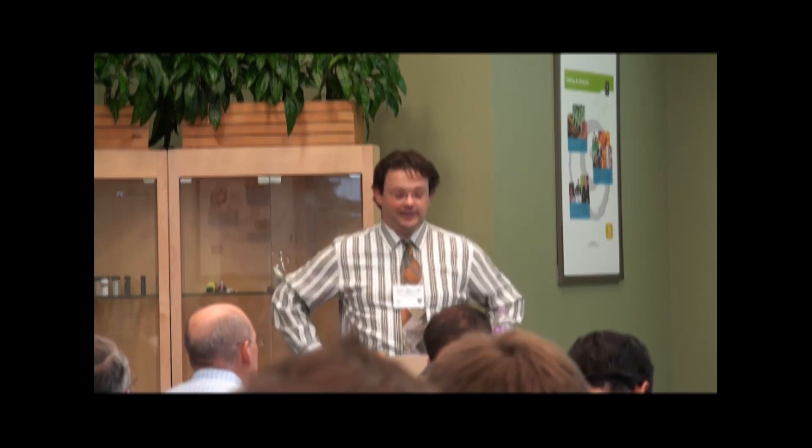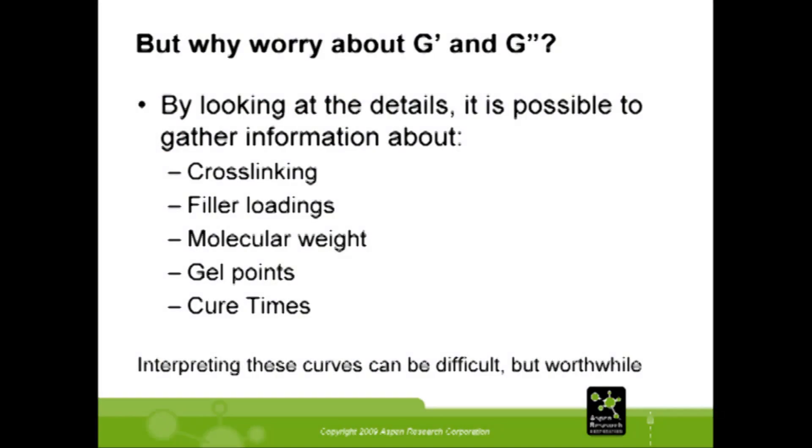By looking at all these curves and comparing them with other samples that are understood and known, we can start gathering information about cross-linking going on in the system, different fillers, possibly the length of weight, gel points, cure times — all of these. These are some of those qualitative aspects that I mentioned earlier with the tip of the iceberg. You can get that by knowing how to interpret the curves of G prime and G double prime.